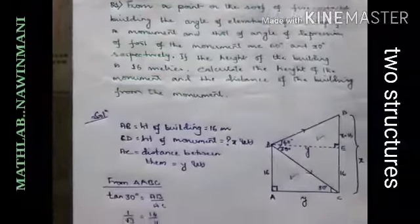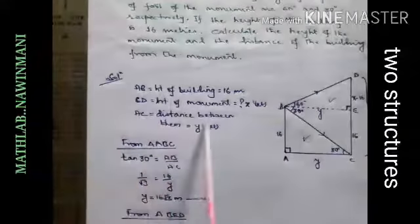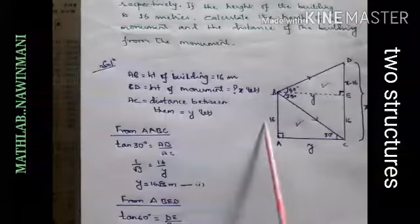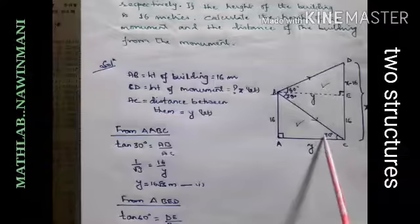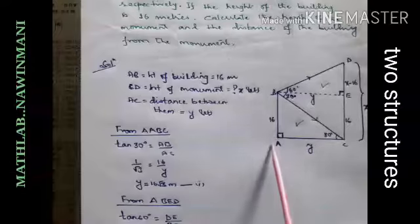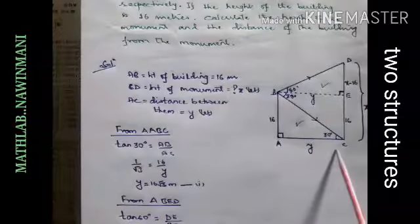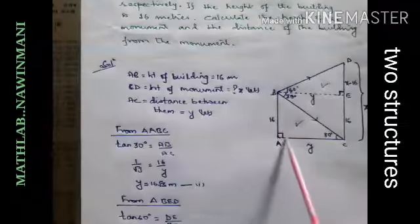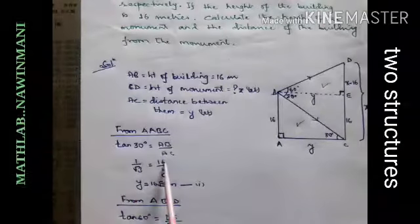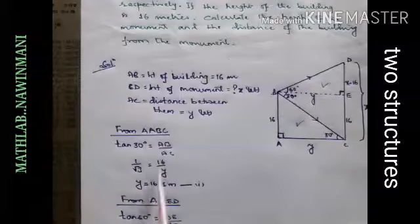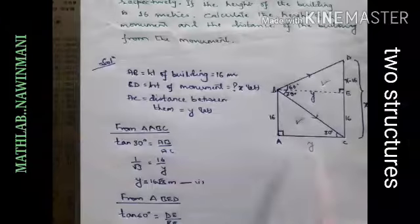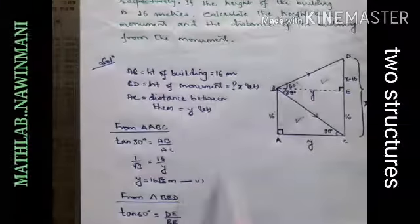First of all we will take this triangle. tan 30 will be perpendicular by base. tan 30 is 1 by root 3. AB is 16, AC is y. So y is 16 root 3. The distance between the building and the monument is 16 root 3 meters.